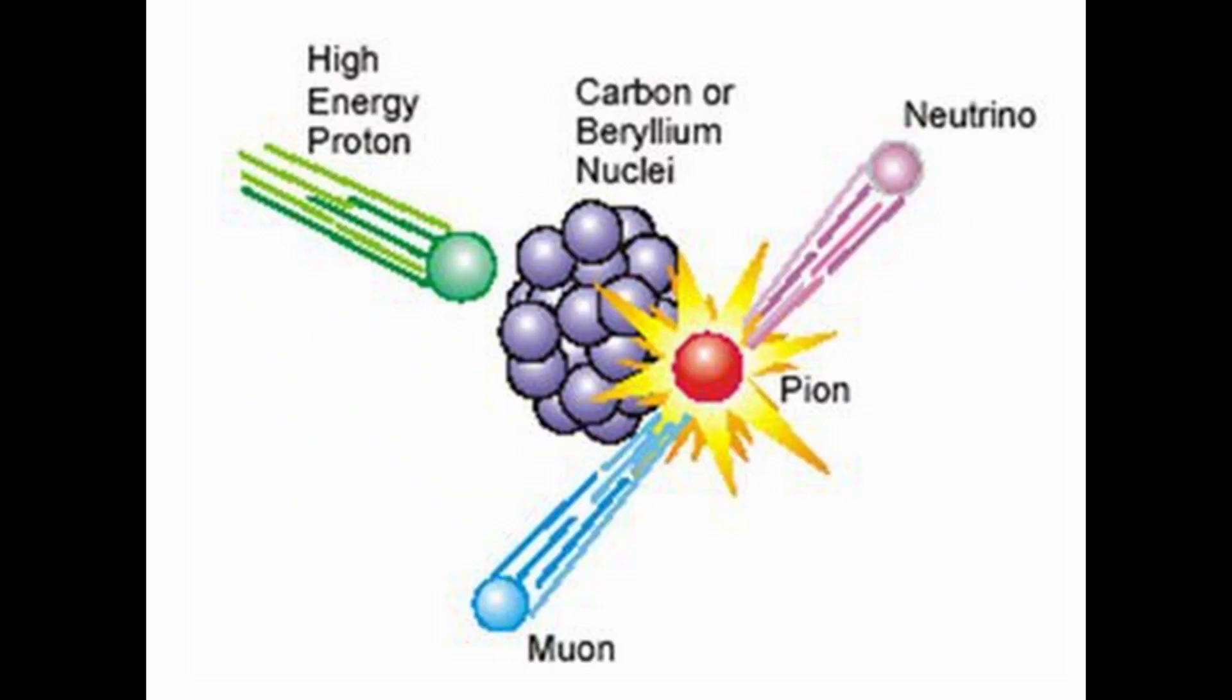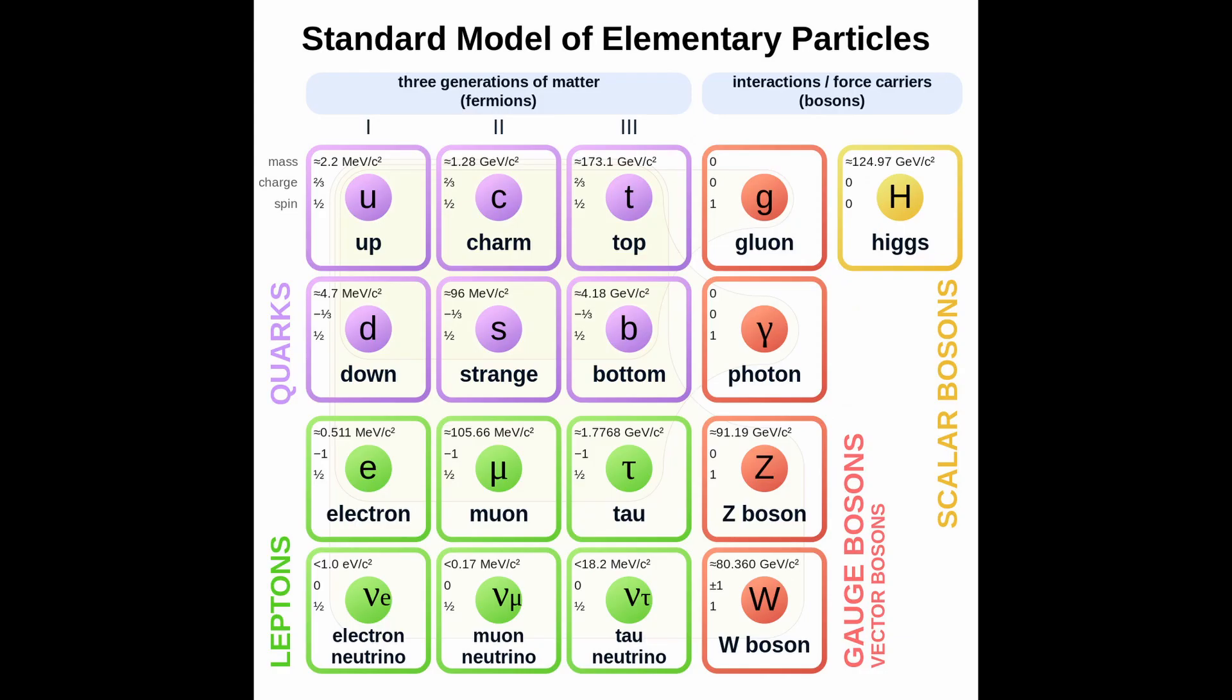Muons possess an internal magnet that processes under a magnetic field, akin to a spinning top. Their behavior reveals the muon's magnetic moment, represented by the symbol g. The muon g-2 experiment transcends the boundaries of the standard model.